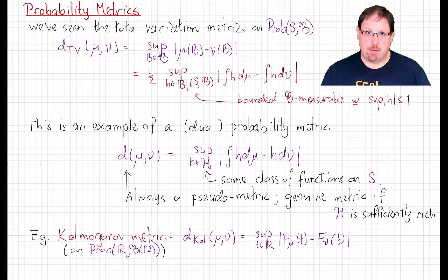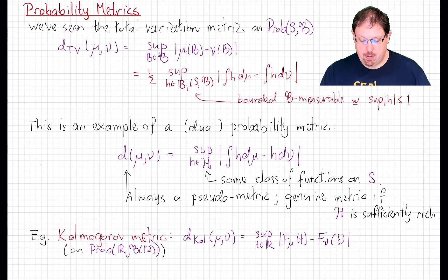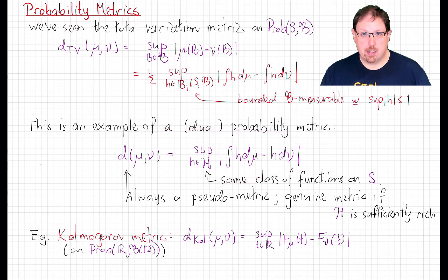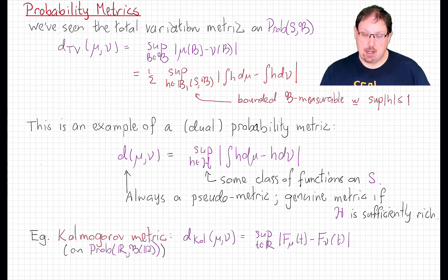Now we have to be careful, because if we make this class of functions too small, this will no longer be a metric. It's easy to verify that this is always a pseudometric, but what can fail as usual is the separation of points. So we need a sufficiently rich class of functions in order for this to be a genuine metric.